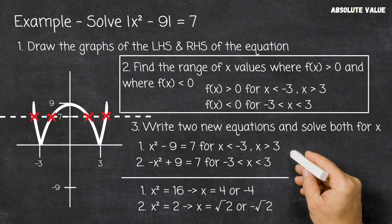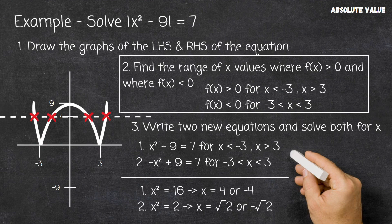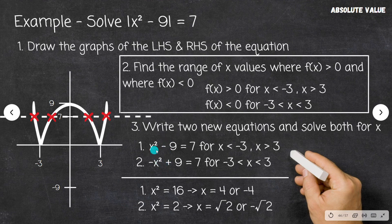So that's it — it's about breaking the problem into three main steps: drawing the graphs of both sides of the equation, applying the modulus function and identifying which part of the graph is affected, and writing two separate equations — one for the part of the graph left untouched, and one for the part that was flipped in the x-axis with a negative sign applied — then solving both.